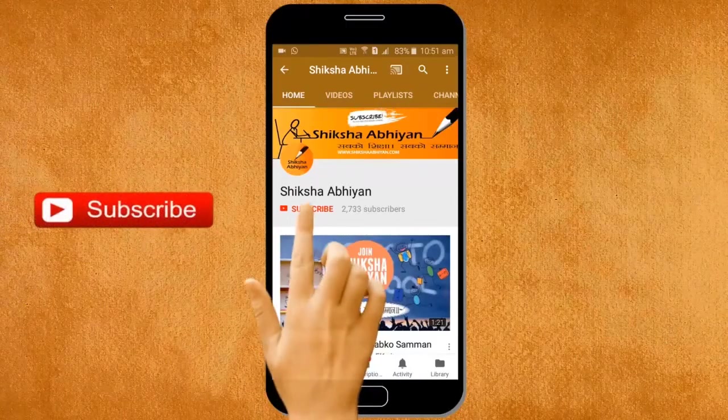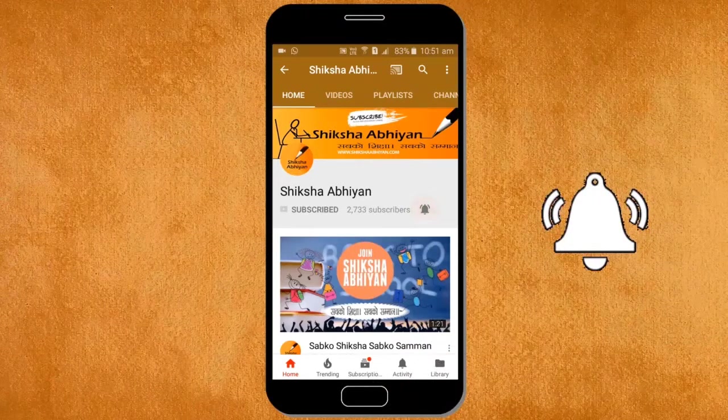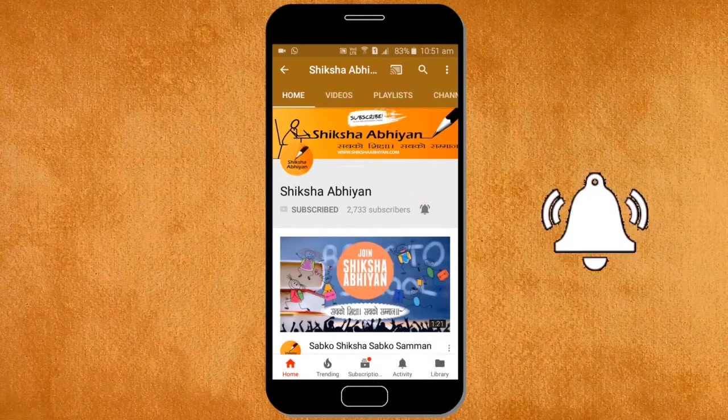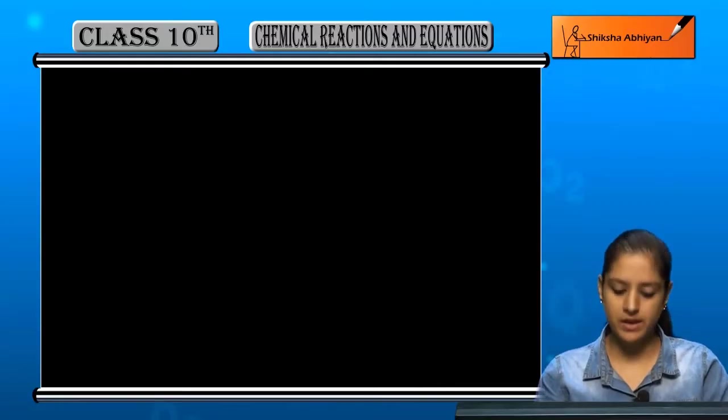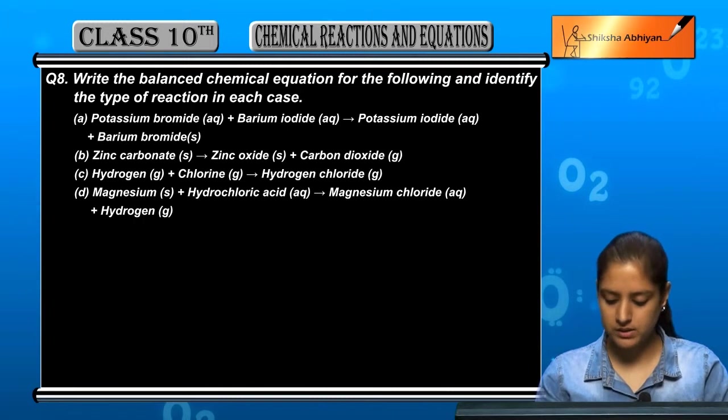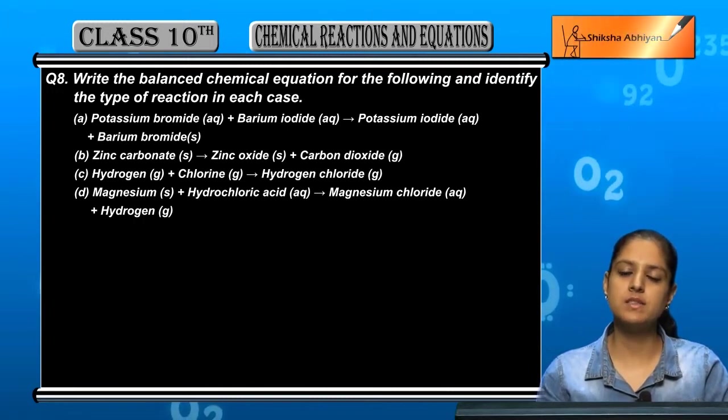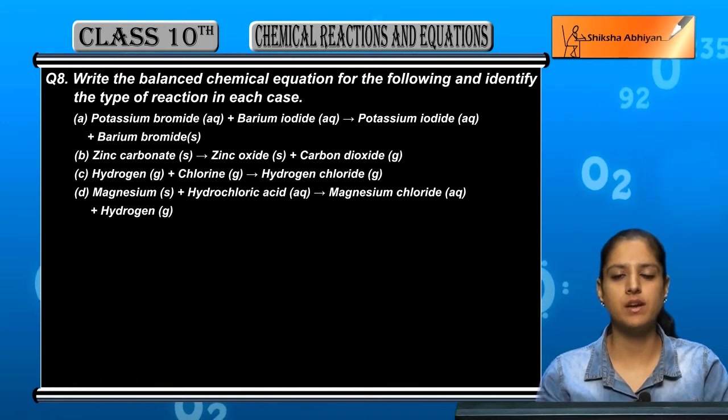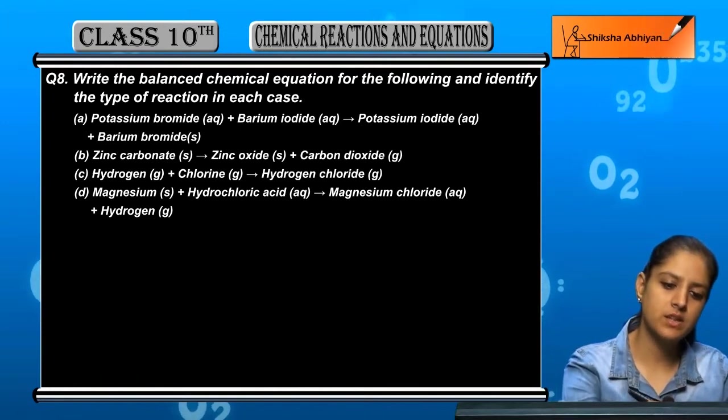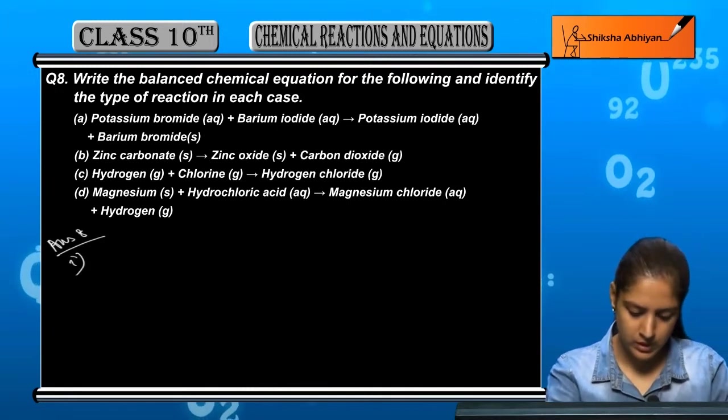Subscribe to our channel by clicking the subscribe button, click the bell button and enjoy the latest uploads from our channel. Now question number 8: write the balanced chemical equations for the following and identify the type of reaction in each case.